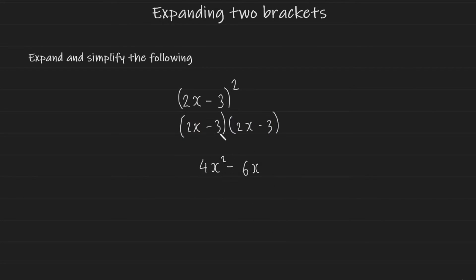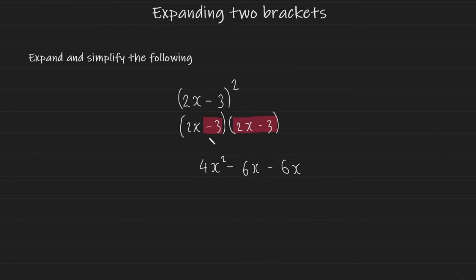Now for the second part, we're going to take the second term in the first bracket, minus 3, and multiply it onto all terms in the second bracket. This is going to give us negative 3 multiplied by 2x, which is another minus 6x. And then negative 3 multiplied by negative 3, which is plus 9.